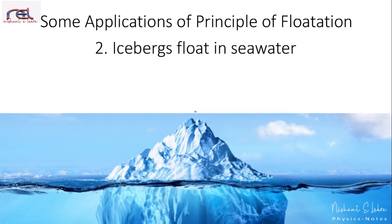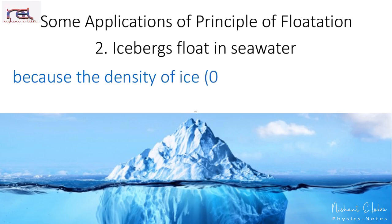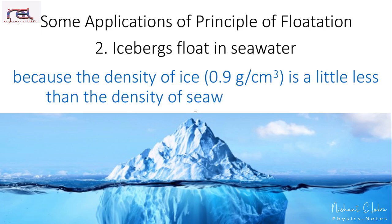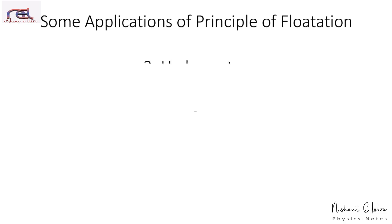Let us see the second application: icebergs float in sea water. You must have seen this on television. Icebergs float because the density of ice, which is 0.9 gram per cubic centimeter, is a little less than the density of sea water, which is 1.02 gram per cubic centimeter. The difference in density between ice and sea water is the reason why icebergs float.